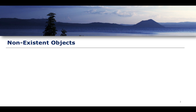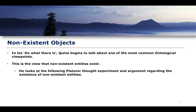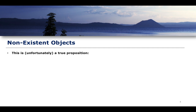So let's begin: non-existent objects. When Quine wrote his paper 'What There Is,' he talks about one of the most common ontological viewpoints — the view that non-existent entities can exist. He looks at the following platonic thought experiment, asking us to consider the proposition: 'Santa does not exist.' Now, unfortunately for those who are big fans of Christmas, Santa does not exist — this is a true proposition.